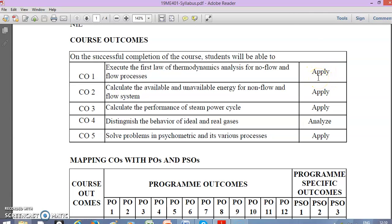We can expect a problem from unit 1, either a derivation or a problem at apply level. The second course outcome is to calculate the available and unavailable energy for non-flow and flow systems. Again, the level is apply. Course outcome 3 is to calculate the performance of steam power cycle, with Bloom's taxonomy level as apply. So you can expect an apply level problem on steam power cycle, normally called Rankine cycle.